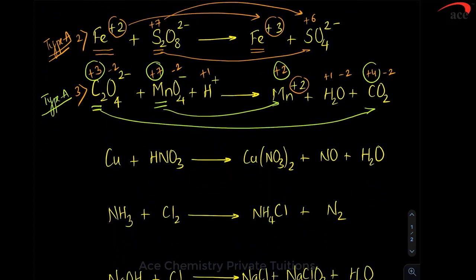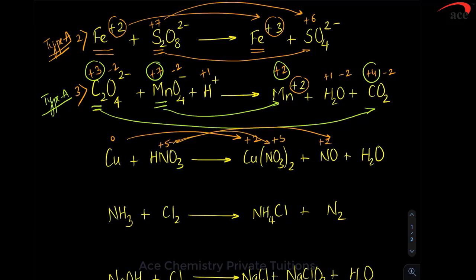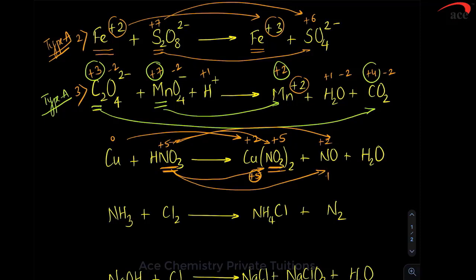Now for a different type: copper is 0 going to +2, so it is undergoing oxidation. Nitrogen is +5 and goes to +2. But if you observe, nitrogen is still +5 in nitric acid because the same nitrate ion is present in the products as well. Till nitrogen is part of a nitrate ion, its oxidation state remains the same. So nitrogen exists in two different forms as a product — in one place the oxidation number is the same, in the other it has changed. Such a type we will call Type B.